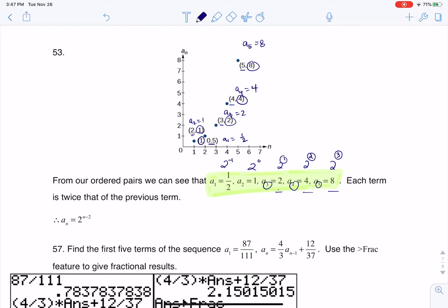So I am losing 2 as I go from my subscript to my exponent. And that's why you see me writing this as a sub n is 2 to the power of n minus 2.